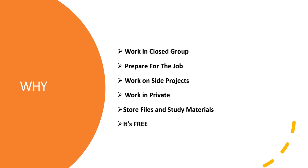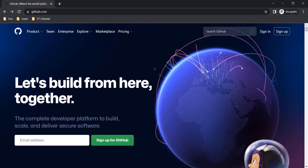To have a private repository on GitHub, you just need a GitHub account, which is also free — you don't need to pay anything. It's free for lifetime. Creating a GitHub account is free for lifetime, and having a private repository is also free for lifetime. Let's quickly understand the steps to create a new GitHub account, and after that we will go through the step-by-step details to create a private repository.